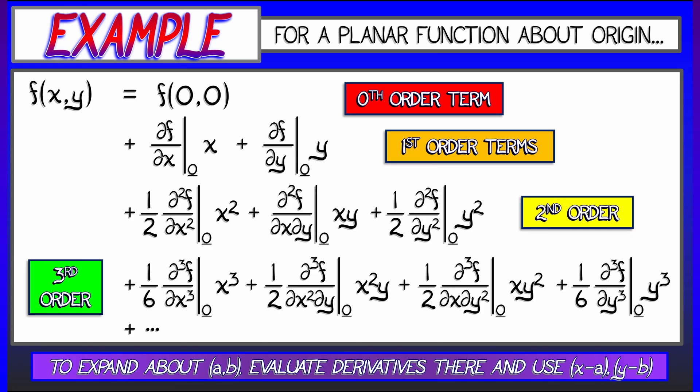And if instead of doing this about the origin, you wanted to do this about some other point, well, you evaluate the derivatives there, and then replace x with x minus a, and y with y minus b. That's it, that's a general Taylor series if you've got a function with two inputs.